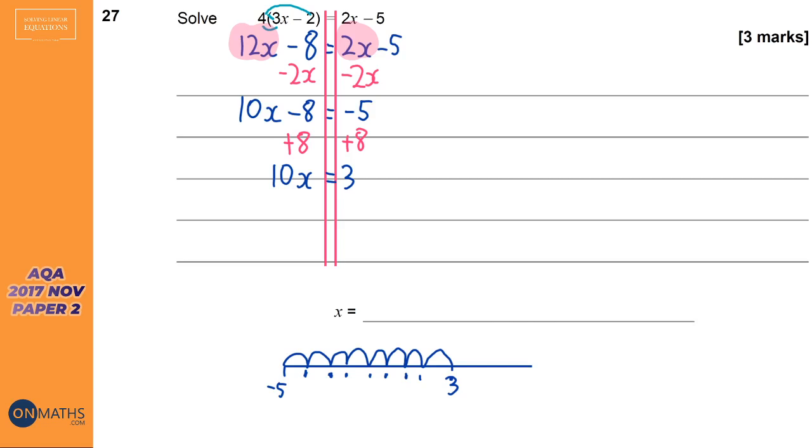So we've got 10x equals 3. We want x, so we need to divide by 10 on both sides. And we've got x equals. Now here's a trick: if you divide by 10, you just shift it right in the columns. So you remember learning about units, tens, hundreds, those columns, and we've talked about them before.